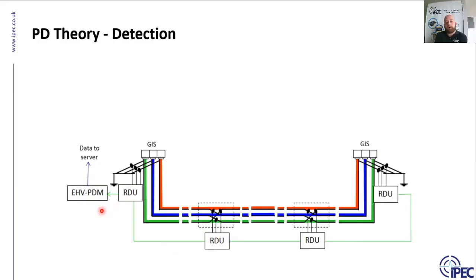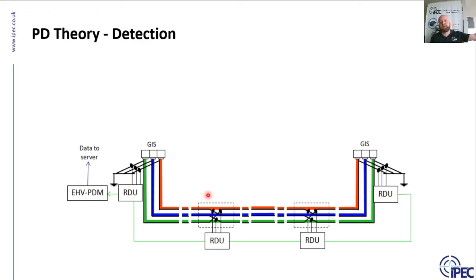On extra high voltage circuits, there are link boxes and cross-bonded joint locations along the circuit, providing extra opportunities to install HFCT sensors. EHV cables tend to be very long — 15 to 20 kilometers — and the typical range of a HFCT is about four or five kilometers, so it's useful to install sensors at multiple points along the cable length. Installing sensors along the circuit also increases sensitivity, detecting smaller PDs more easily.